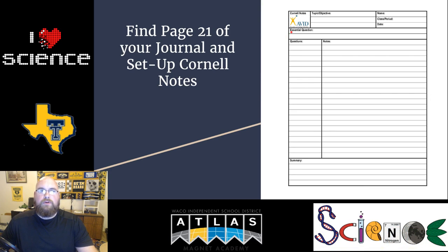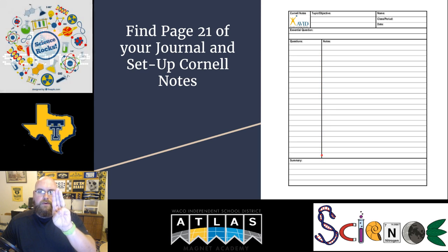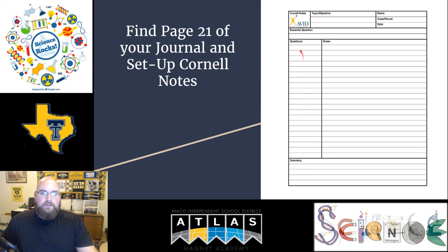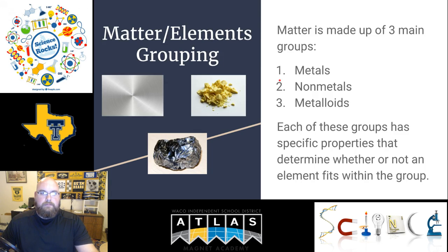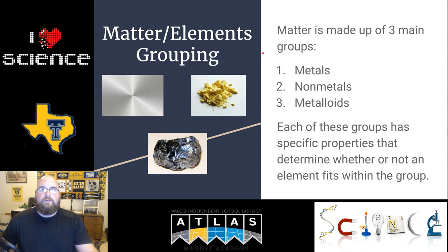Remember, the title line holds your essential question. Then draw a line about three fingers' width from the center of your journal to create your question section and your notes section, and leave about four or five lines at the bottom for your summary section. So to get started — what are the three main groups for elements?